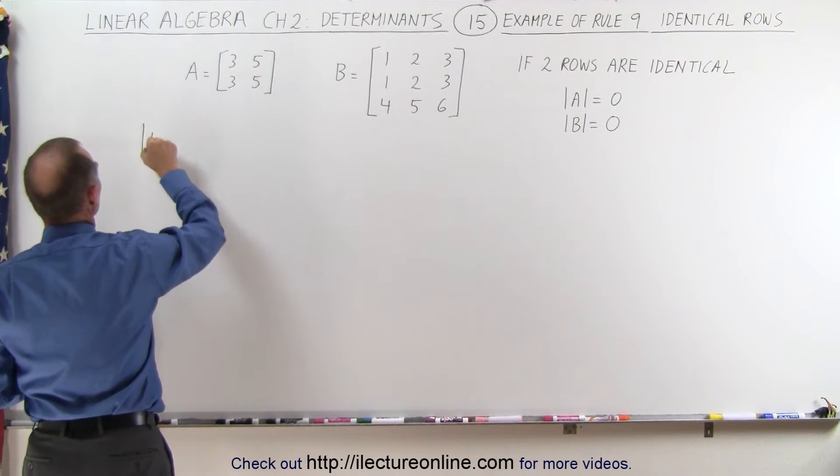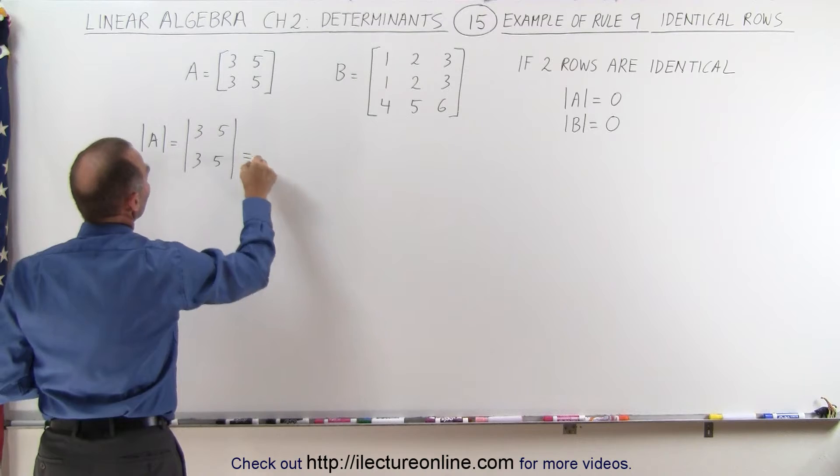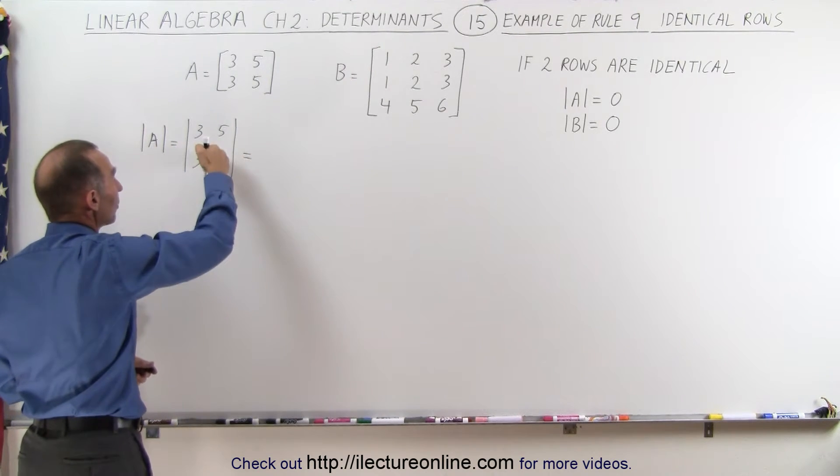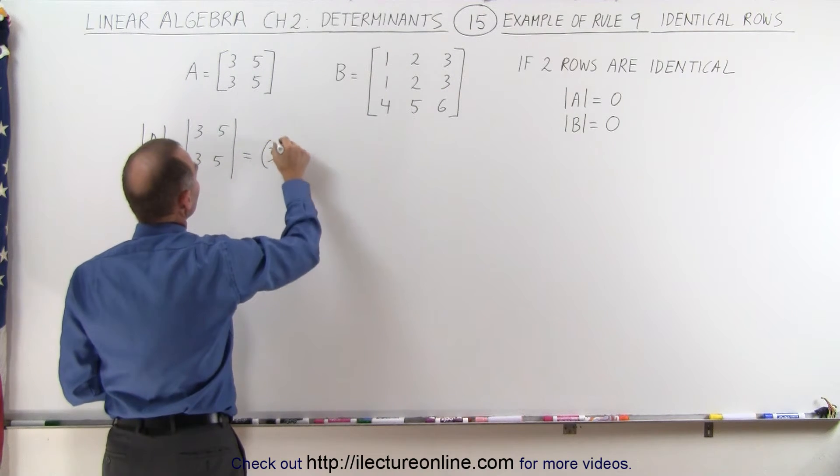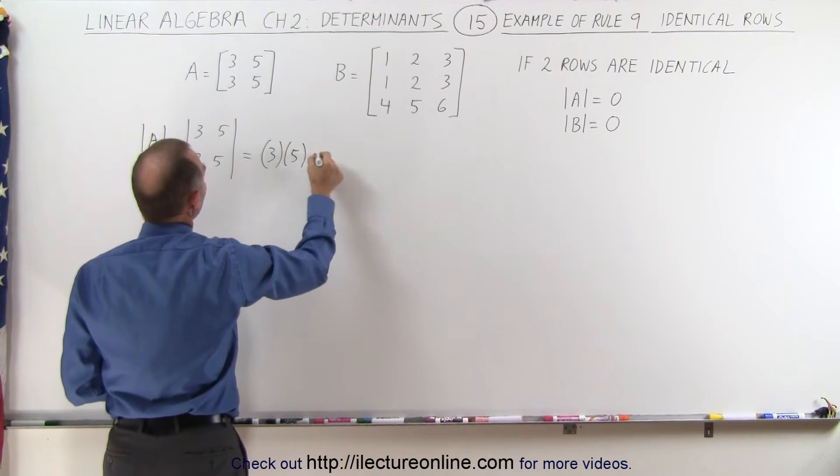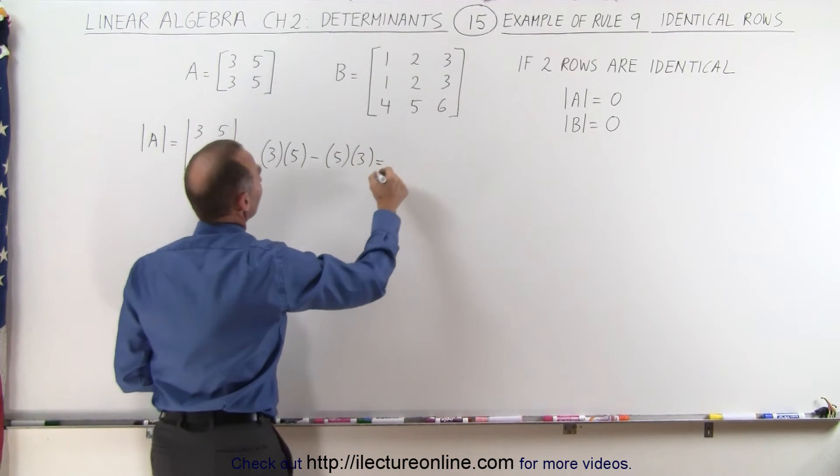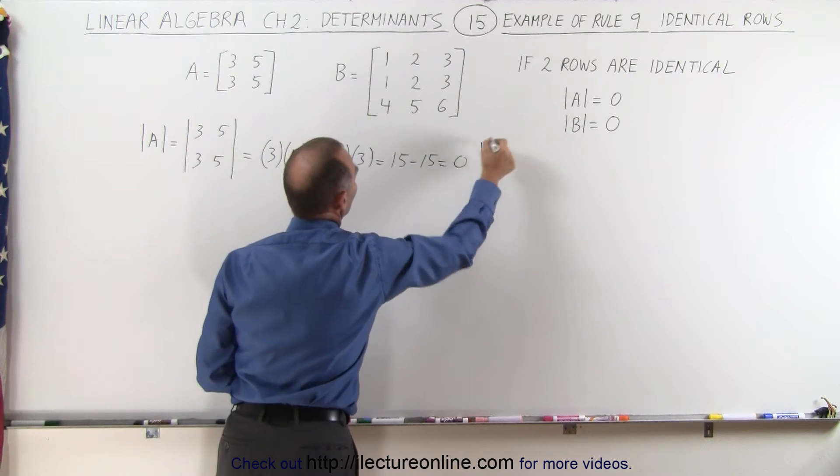So here's the determinant of matrix A which can be written as 3 5 3 5 like this. The determinant can be found by multiplying these two diagonals and subtracting the product of those two. So this becomes 3 times 5 minus 5 times 3, which of course is equal to 15 minus 15 which is zero. Check.